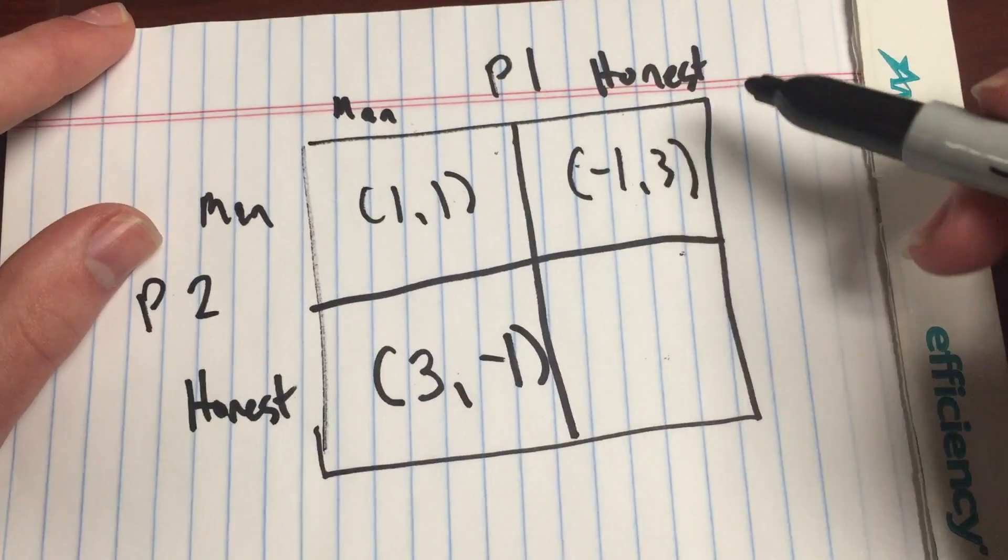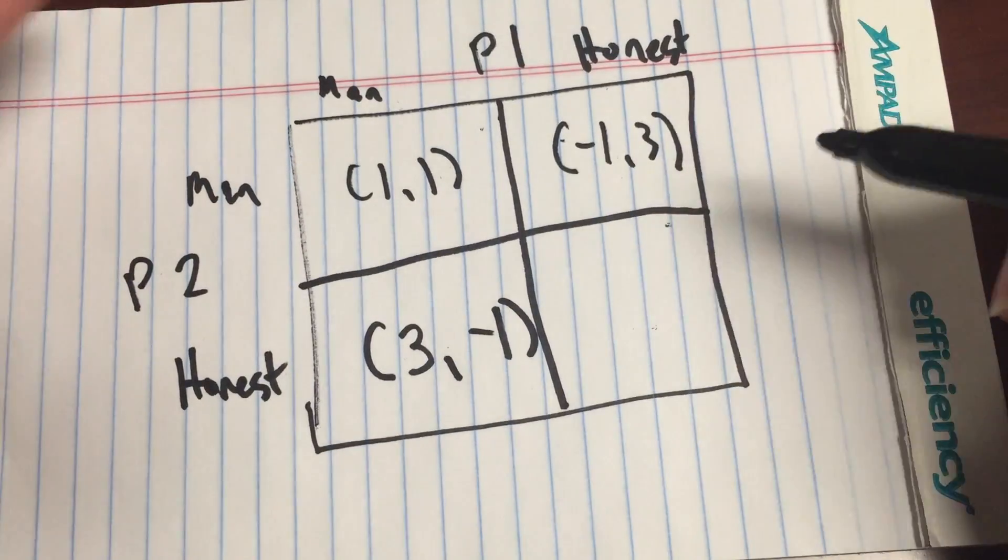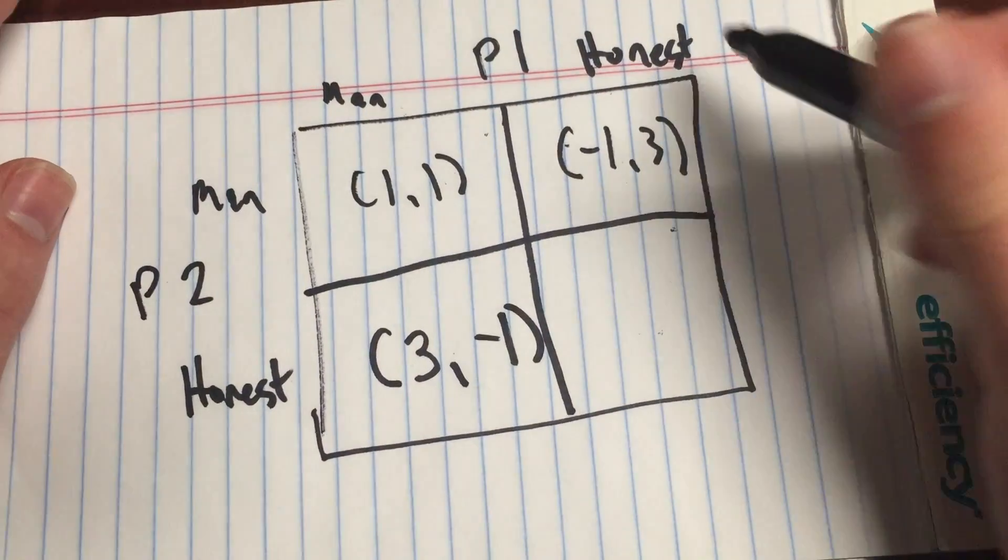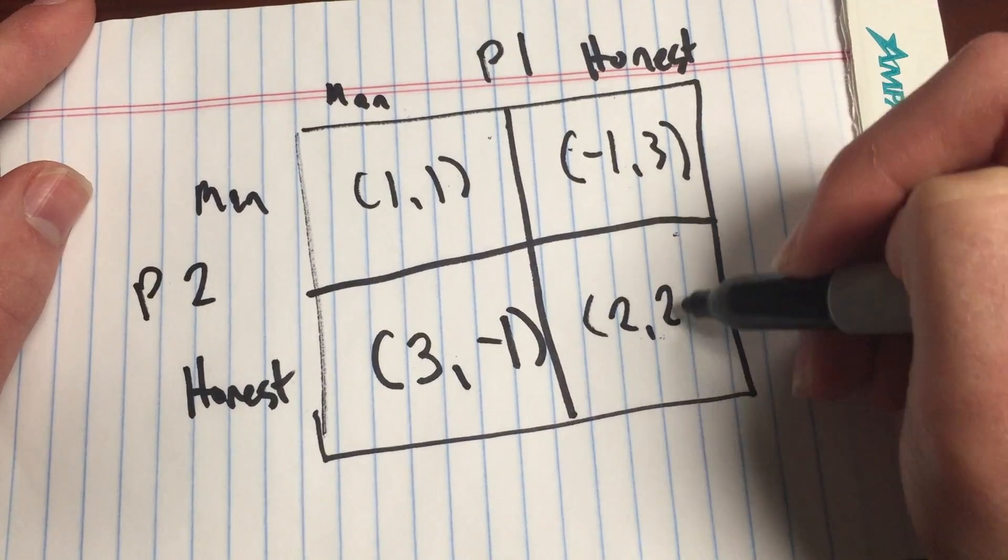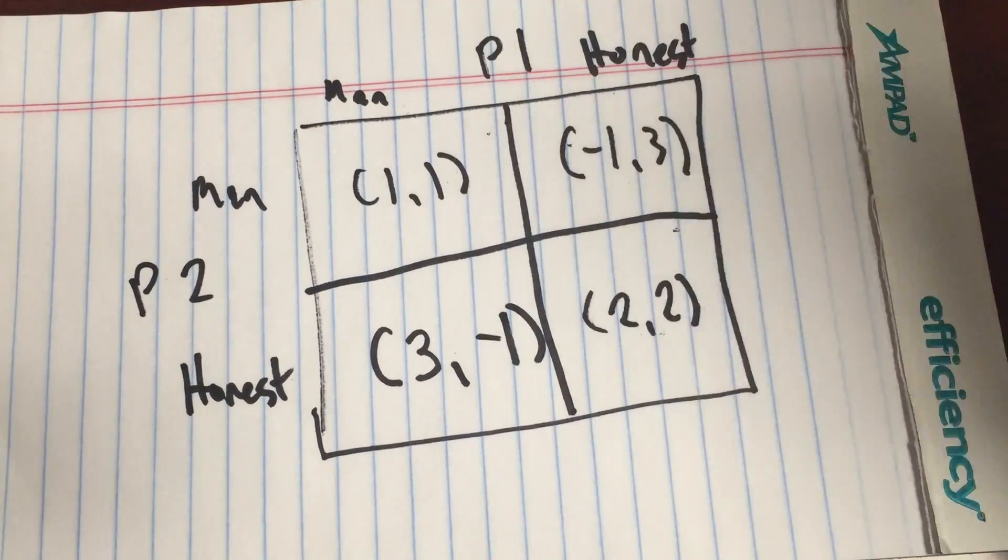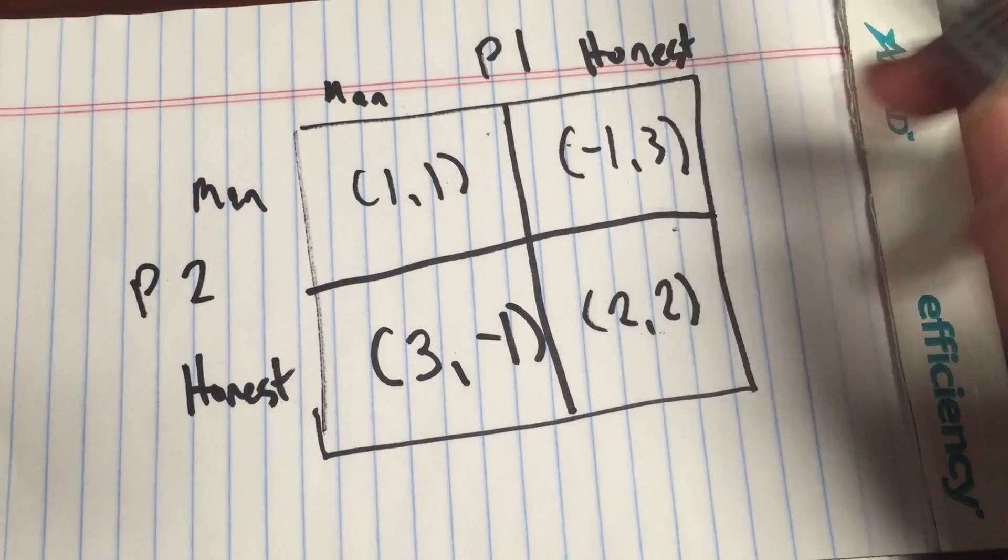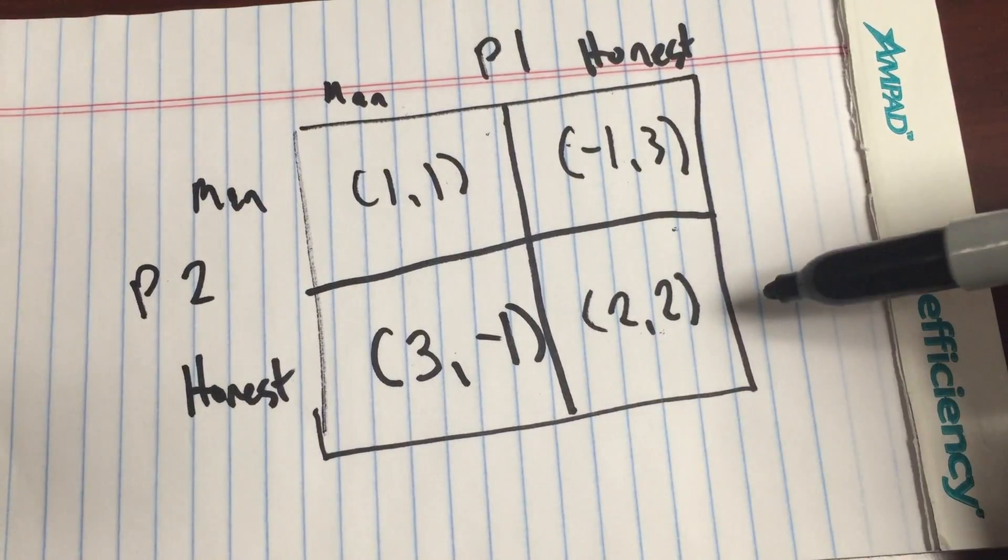Now, if they're both honest, we have a weird conundrum on our hands, where they'll both benefit, but not as much as if they were able to take away something from the other person, because they had leverage against them. So we're going to write that as two.